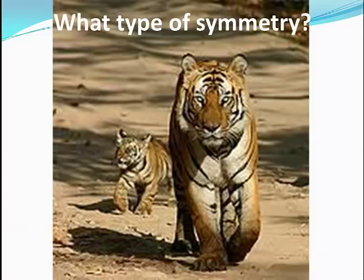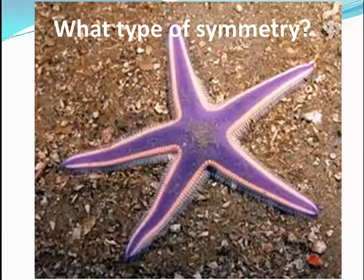A tiger also has bilateral symmetry — looking straight at the front of the face and dividing right down the middle, it's the same on both sides. Finally, a starfish has radial symmetry. You might initially think bilateral when you look at it, but it can be divided in any direction and it will be equal on any side.